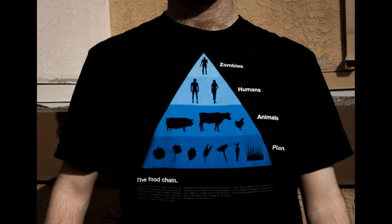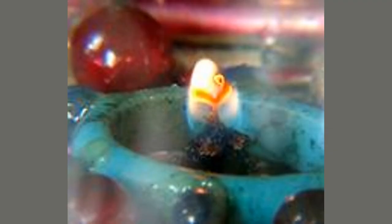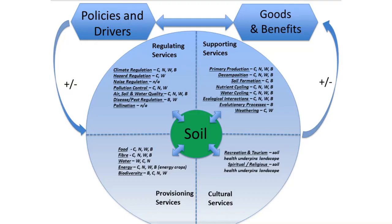As energy is passed from one organism to another, some of it is lost as heat, and some of it is used for growth and reproduction. The video shows an energy pyramid, which illustrates the decrease in available energy as you move up the food chain. Matter, on the other hand, is recycled in ecosystems through biogeochemical cycles. The video shows examples of biogeochemical cycles, such as the carbon cycle, the nitrogen cycle, and the water cycle.